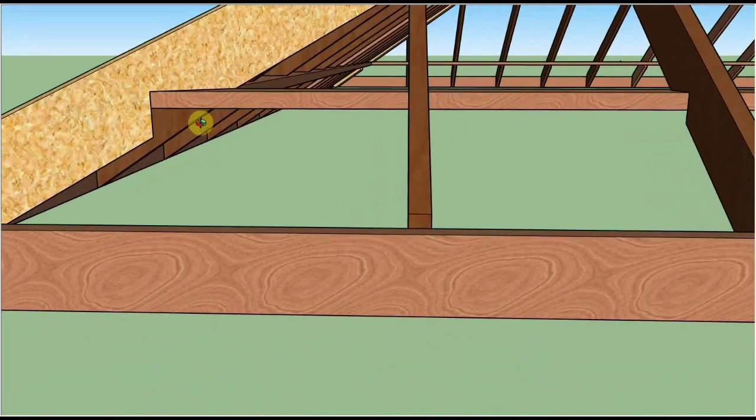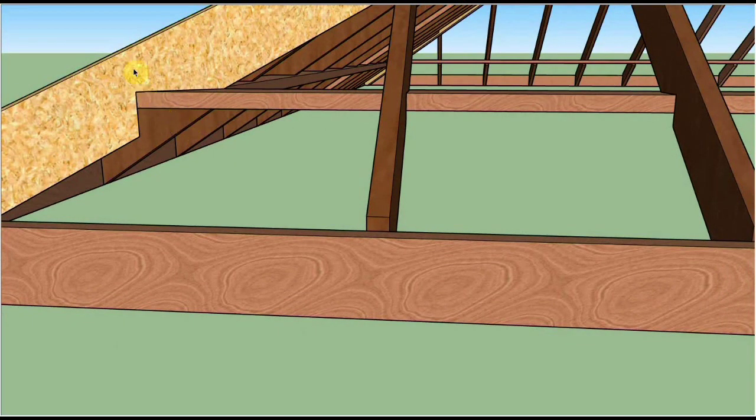Here's the bird's mouth cut of a hip rafter. It consists of a plumb cut and a horizontal seat cut that's sitting on the plate.